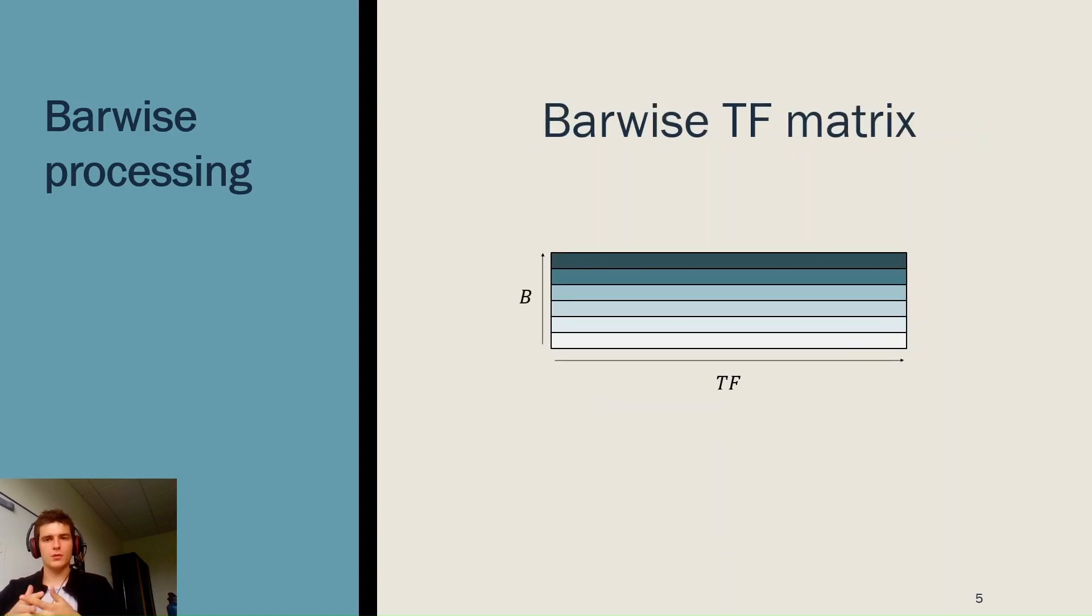This content is reordered in a new matrix called the bar-wise TF matrix with two dimensions: a dimension b corresponding to bars, and a dimension tf corresponding to frequencies at the bar scale. The hypothesis behind this processing is that boundaries are located on bars.